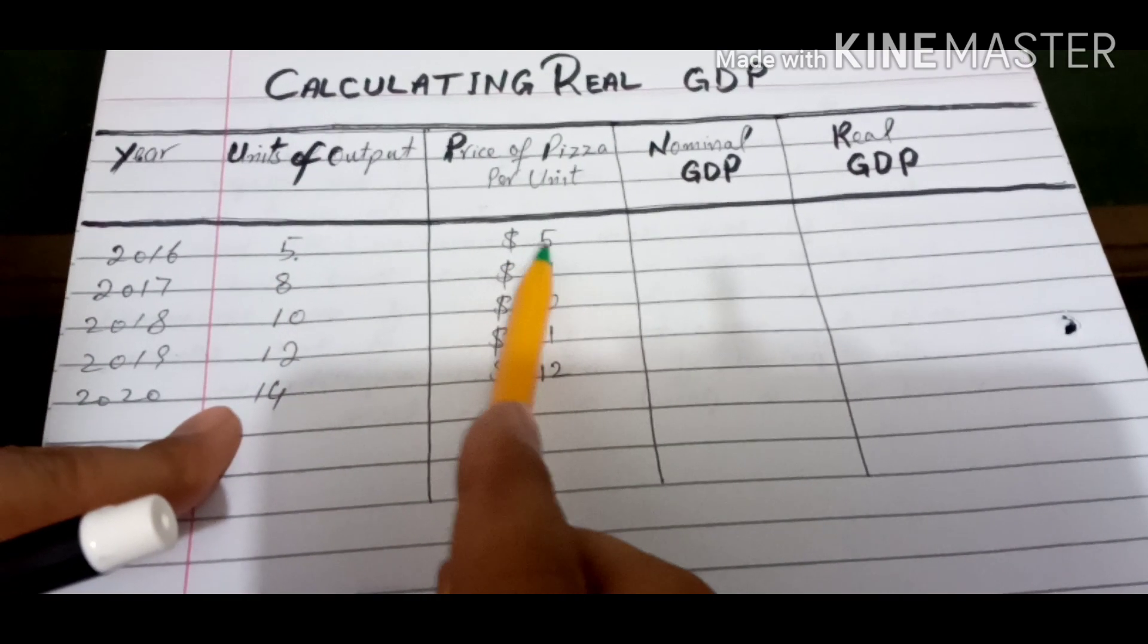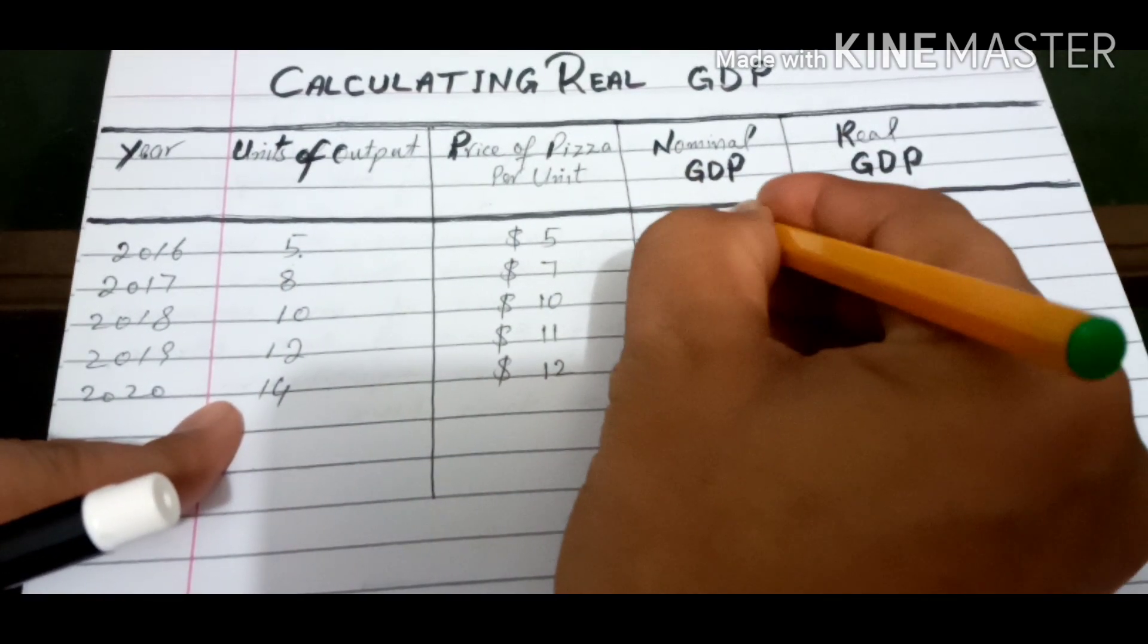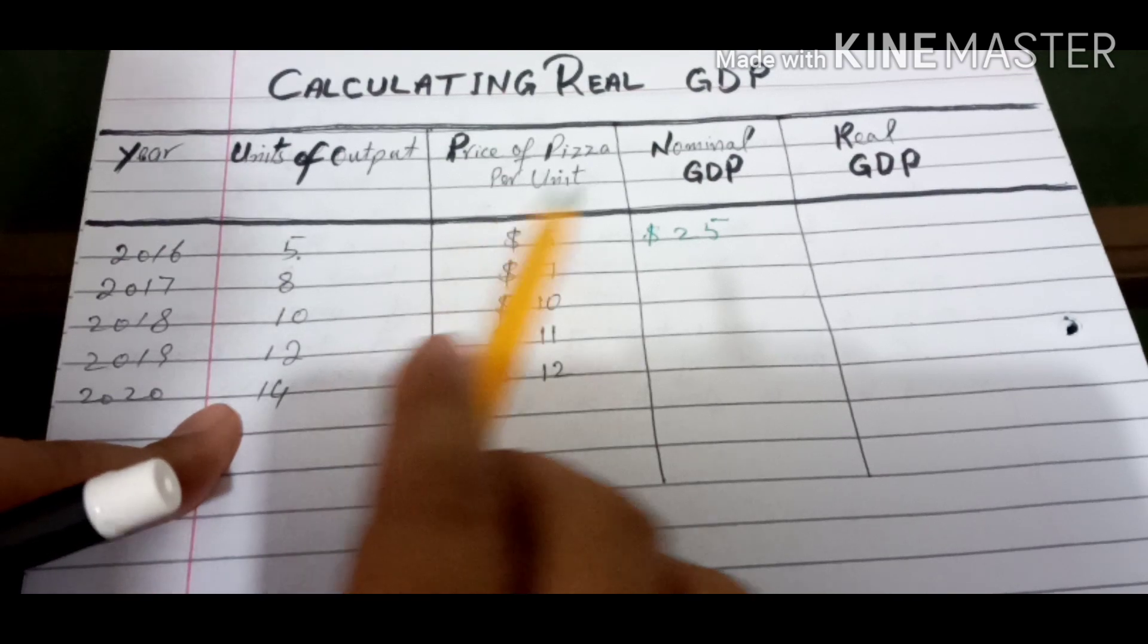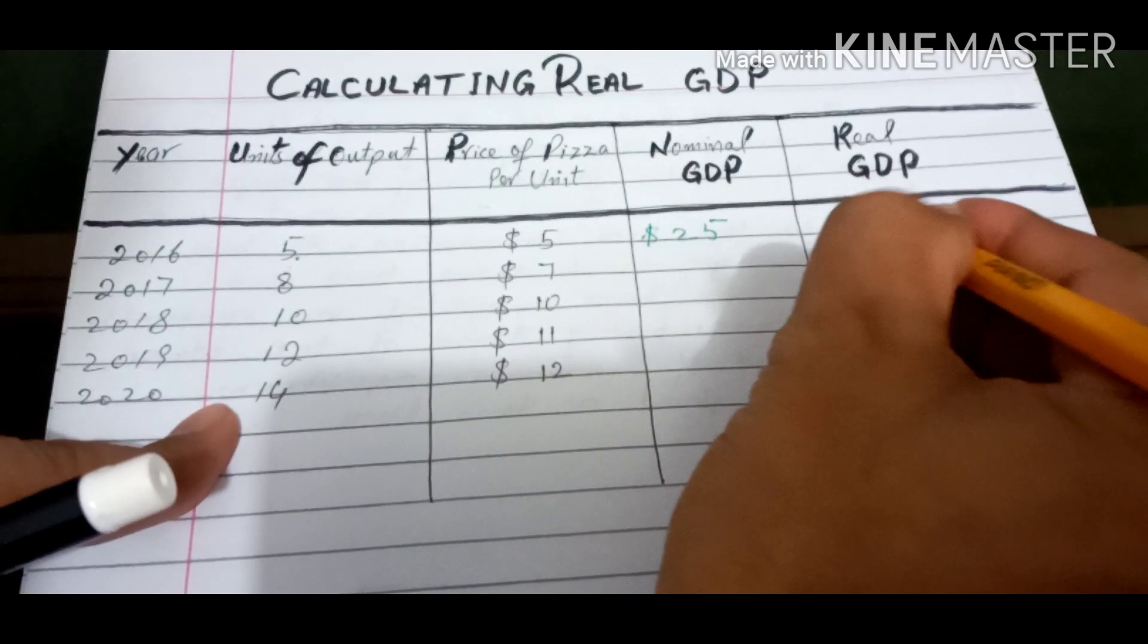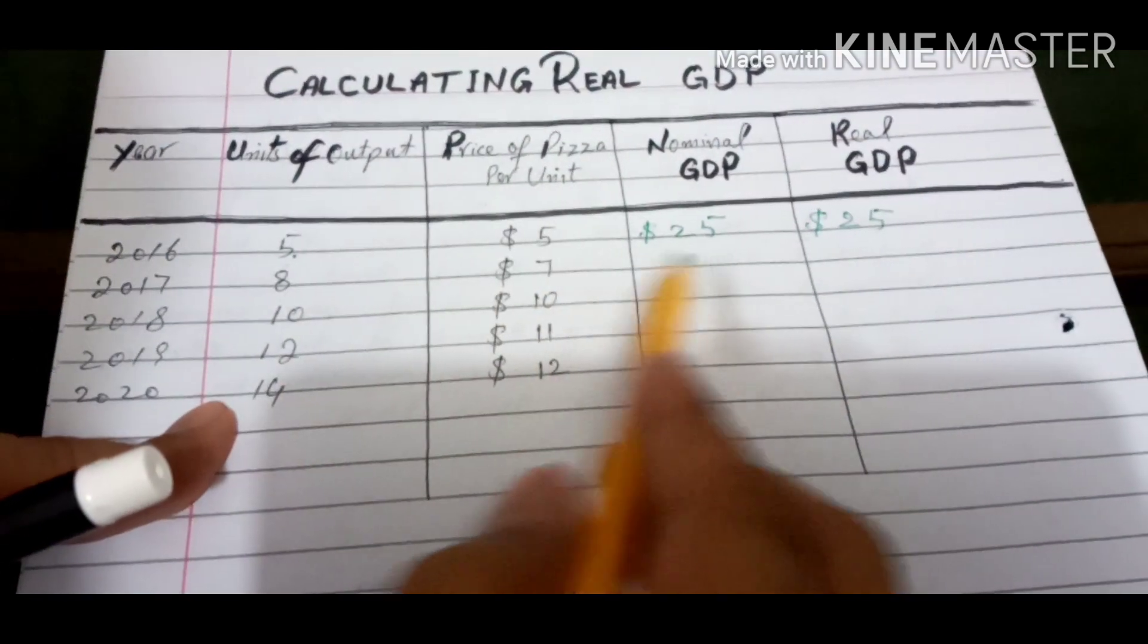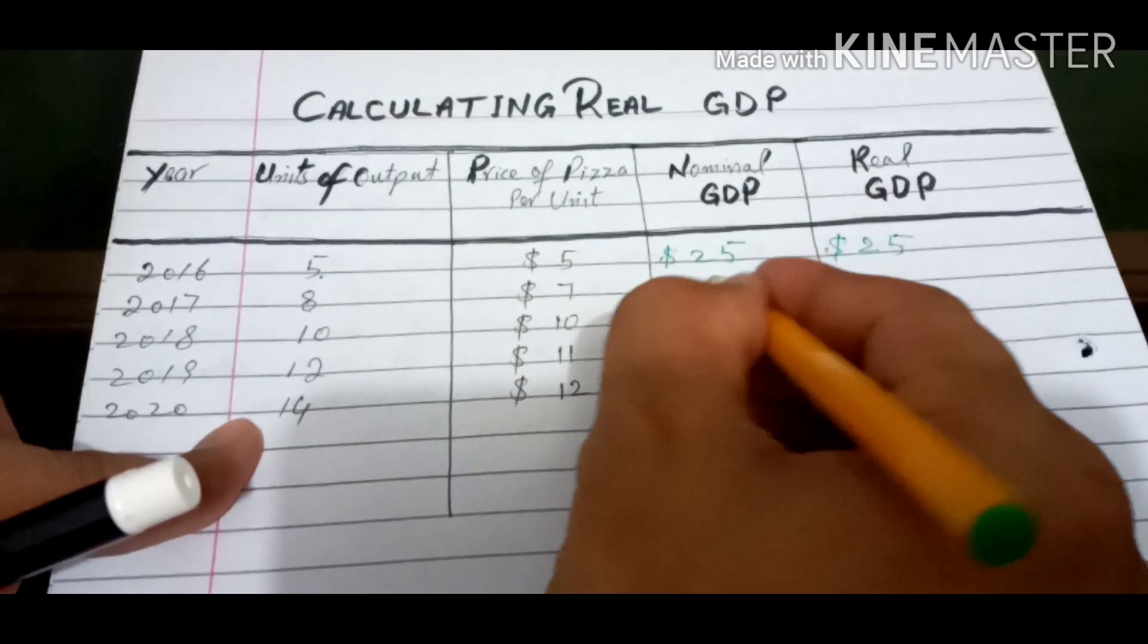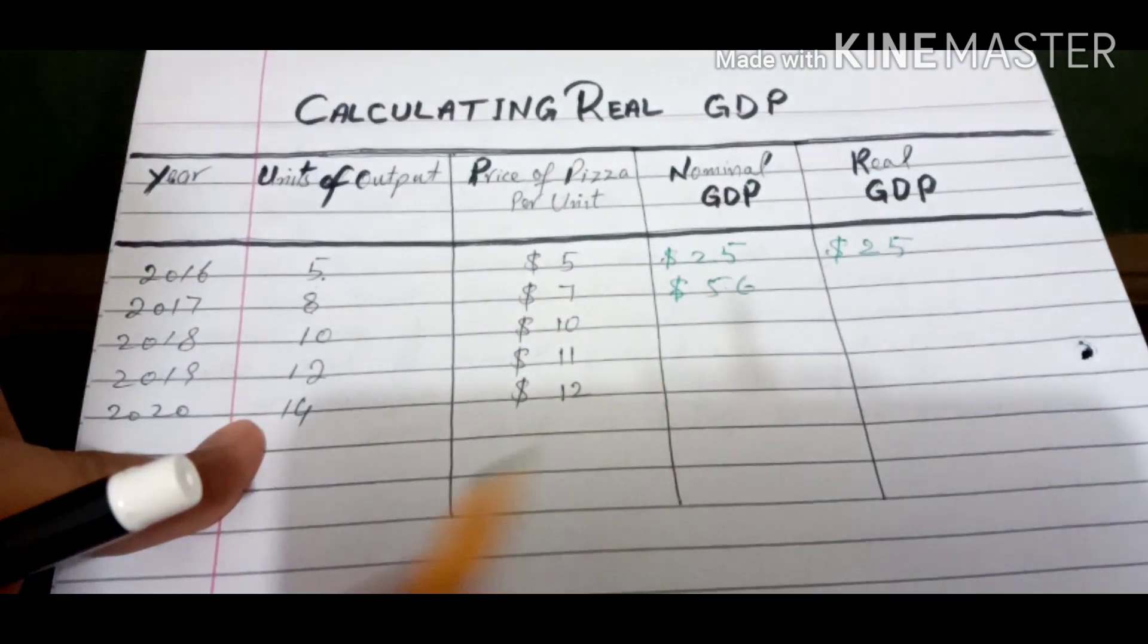5 multiplied by 5, nominal GDP will be $25. Now let's see that this price has no price, so it means that first of all, real GDP will be $25 in which inflation is included.